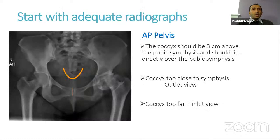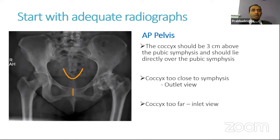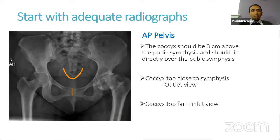The first step is to start with good quality adequate radiographs. We need a good AP pelvis that includes both hip joints and both proximal femurs — at least the proximal one third. We need to make sure it meets certain criteria: the tip of the coccyx should be in line with the symphysis pubis, and it should be about three centimeters from the symphysis pubis. This ensures the pelvis is not rotated and is appropriately tilted so we don't get wrong information about the acetabulum and femur.